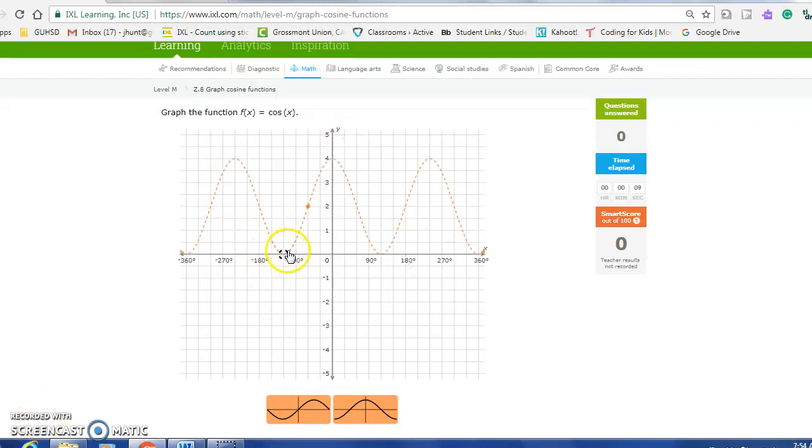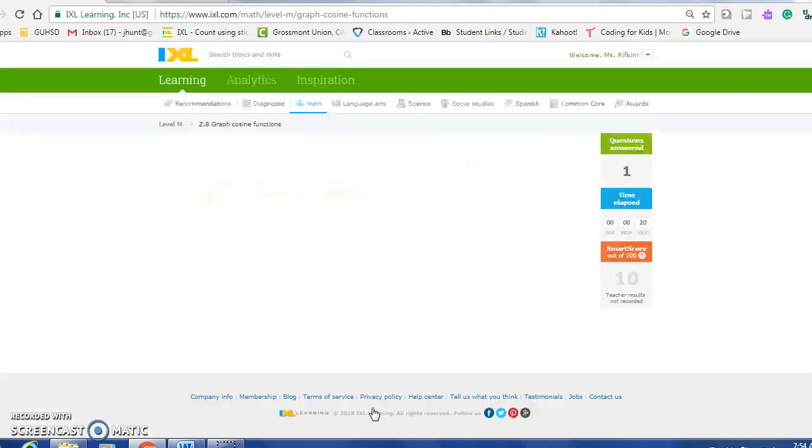Alright, we're going to be graphing. Let's try this again. So since it's cosine, we focus on the one that makes the letter C. So I click that, that's the parent function, so I'm done.